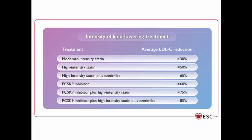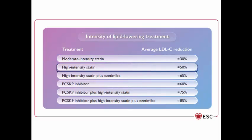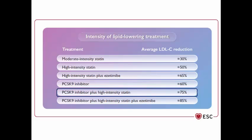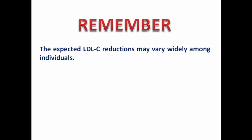This diagram is important when prescribing medication in order to expect how much LDL reduction will be achieved. With moderate-intensity statin, expect 30% reduction. With high-intensity statin (atorvastatin 40 mg or higher, rosuvastatin 20 mg or higher), expect 50% reduction. Adding ezetimibe can reach 65%. Using PCSK9 inhibitor alone can reach 60%. Using PCSK9 with high-intensity statin can reach 75%, and adding ezetimibe can reach 85%. Note that patients may vary in pharmacological response.